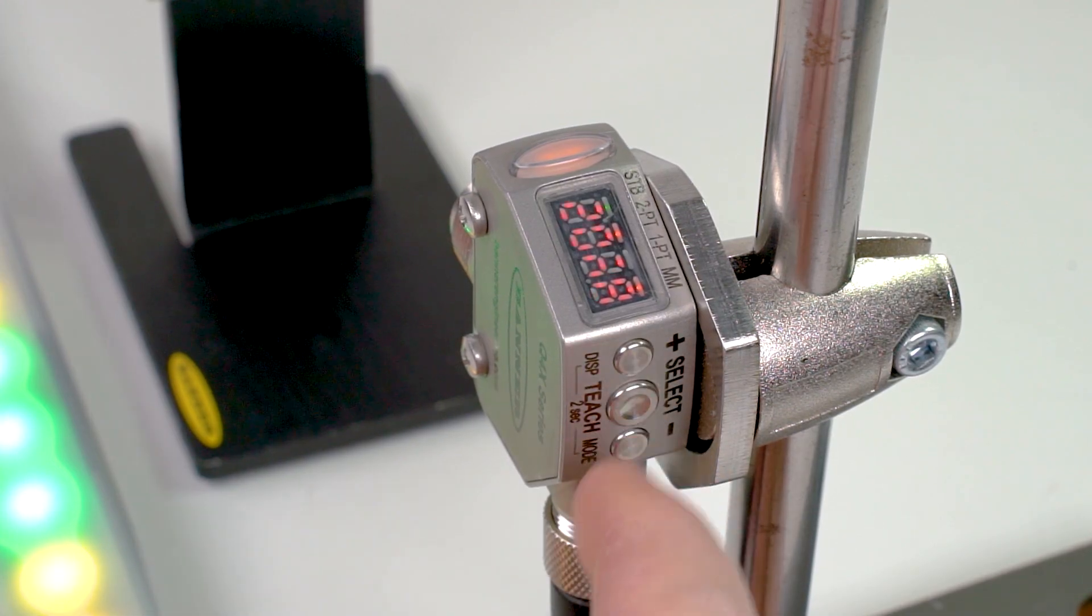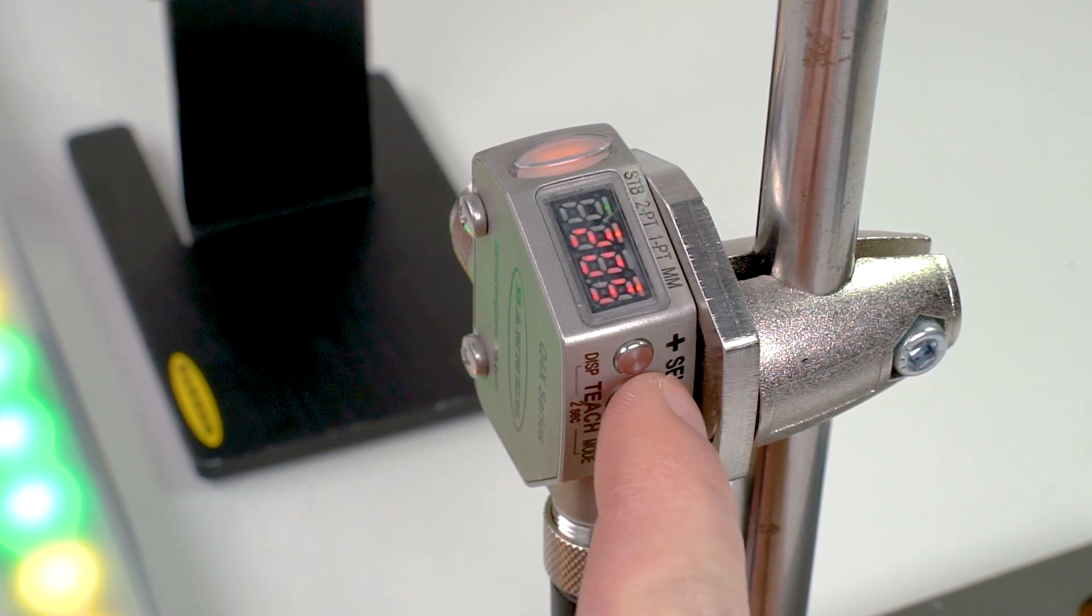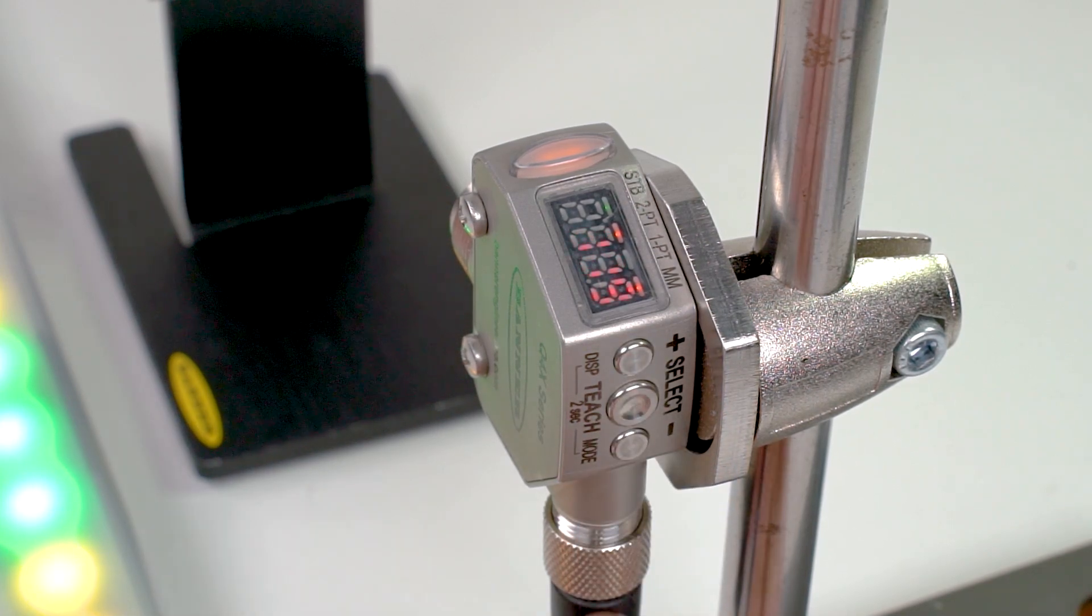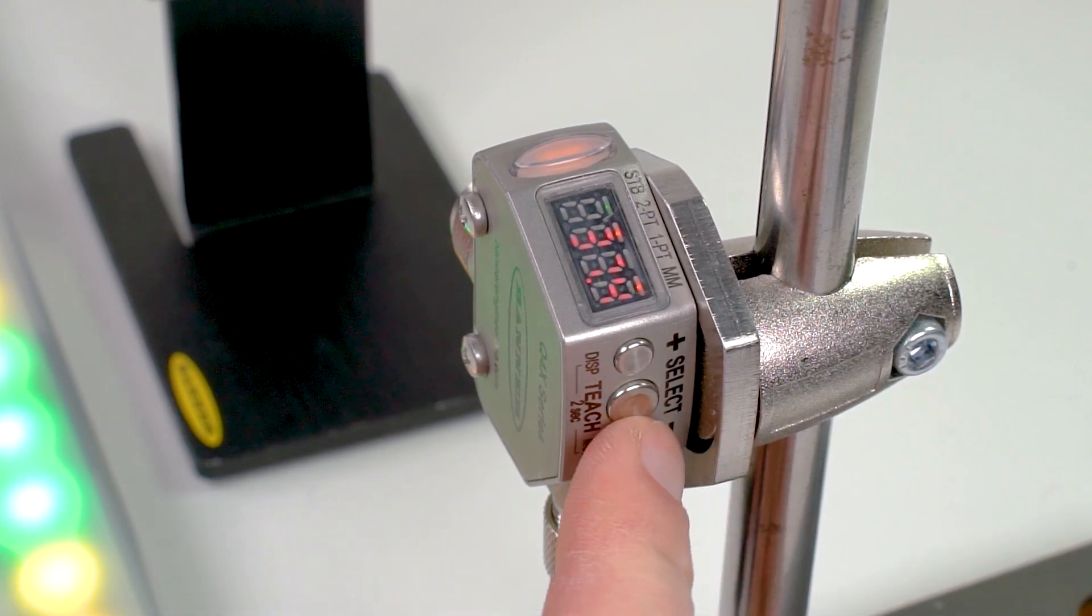Press the plus button to initiate the adjustment for the upper limit of the signal and then use the plus and minus buttons to make the adjustments. Press the select button or leave the sensor alone for two seconds to confirm the selection. Press the minus button to initiate the adjustment of the lower limit and then follow the same process.